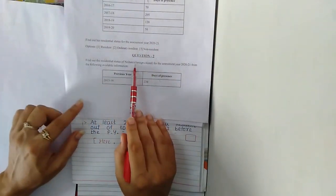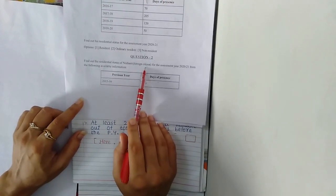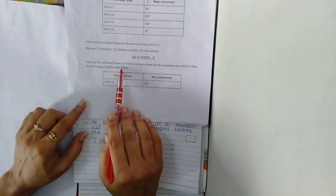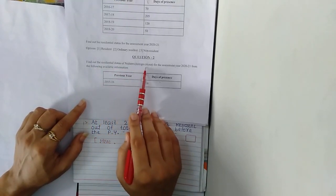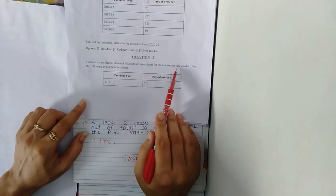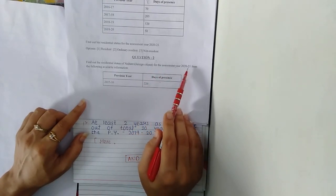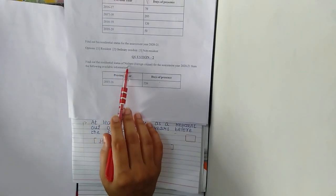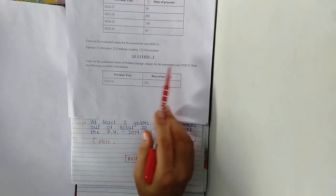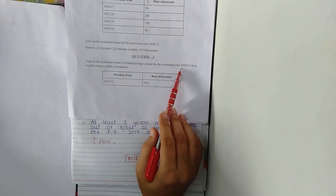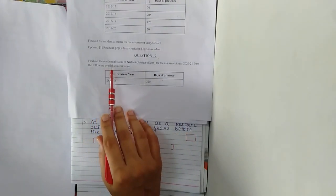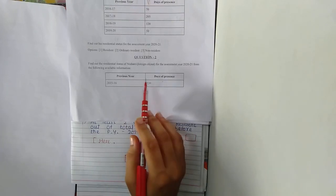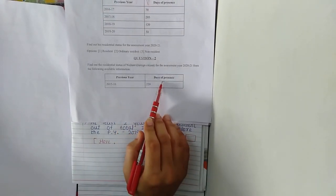Let us start today with another example of residential status. Question number 2: find out the residential status of Nishant, who is a foreign citizen, for the assessment year 2020-21 from the following available information. A table is given with two columns: previous year and days of presence.